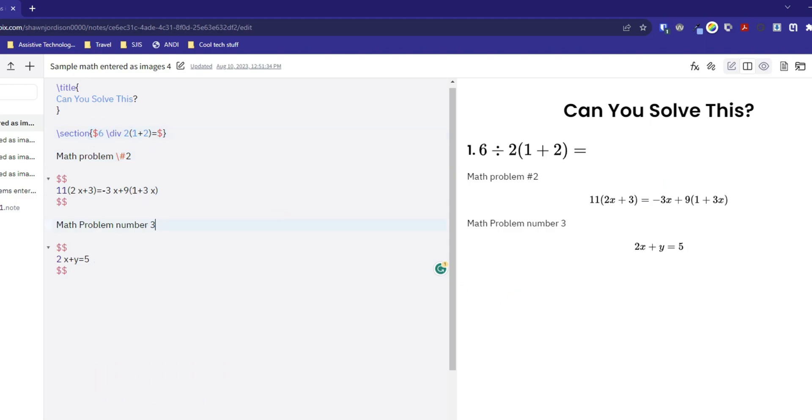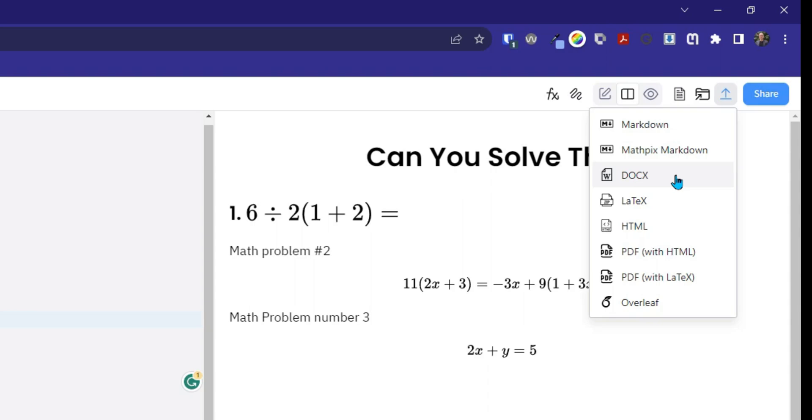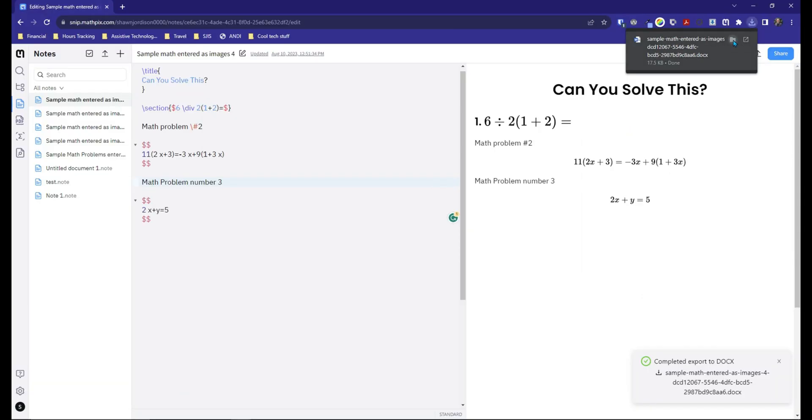Next, we can export the file by selecting the export button in the top right corner. We don't want to export to a PDF as it's very challenging to make math accessible inside of a PDF. So I'm going to take this to docx. Once that file has exported, we can go and open it.